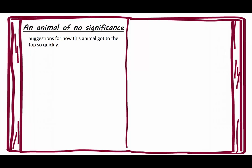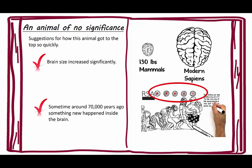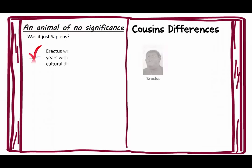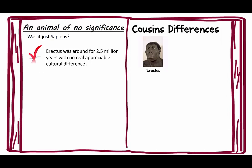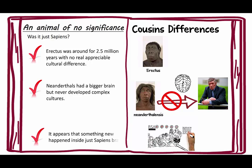Suggestions for how this animal got to the top so quickly: the brain size increased significantly. The comparison is between a normal 130-pound mammal and a modern sapien — this is the comparative size of the brain. However, sometime around 70,000 years ago, something new happened inside the brain, and that's still a mystery as to exactly how and what that was. Erectus was around for 2.5 million years and never showed any appreciable cultural difference. The Neanderthals had a bigger brain but never developed complex cultures. So whatever that something new is, it happened just inside sapiens' brain.